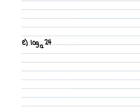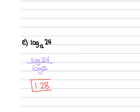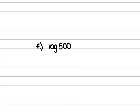For E, we have log₁₂ of 24, which is log 24 divided by log 12, giving 1.278942946. Rounded to the nearest hundredth, that's 1.28. For F, we have log 500. The invisible base is 10, so this is log 500 divided by log 10, which is just log 500 since log 10 equals 1. That gives 2.69897004, which rounds to 2.70.